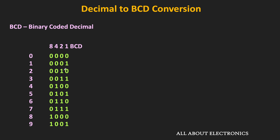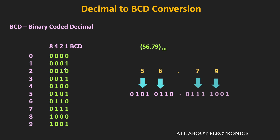For fractional numbers, the rules remain the same. Let's say we want to convert the decimal number 56.79 into the equivalent BCD number. Let's replace each decimal digit with the corresponding BCD code. Here, 5 can be replaced as 0101, while 6 can be replaced with 0110. Similarly, after the decimal point, 7 can be replaced as 0111, while 9 can be replaced with 1001. So this is the BCD equivalent of the given decimal number.